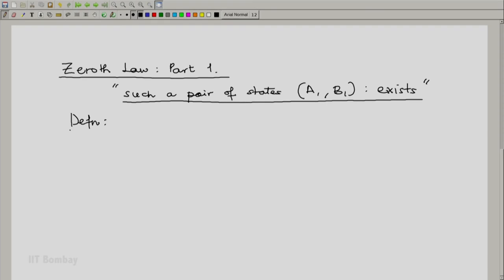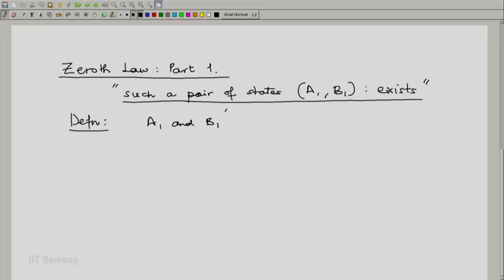Now some definitions. This long-winded way of saying, let us shorten it. States A1 and B1 are such that if they are allowed to interact across a diathermic wall, in spite of that wall permitting heat transfer, no heat transfer will take place. All this is shortened by saying that A1 and B1 are isothermal states.